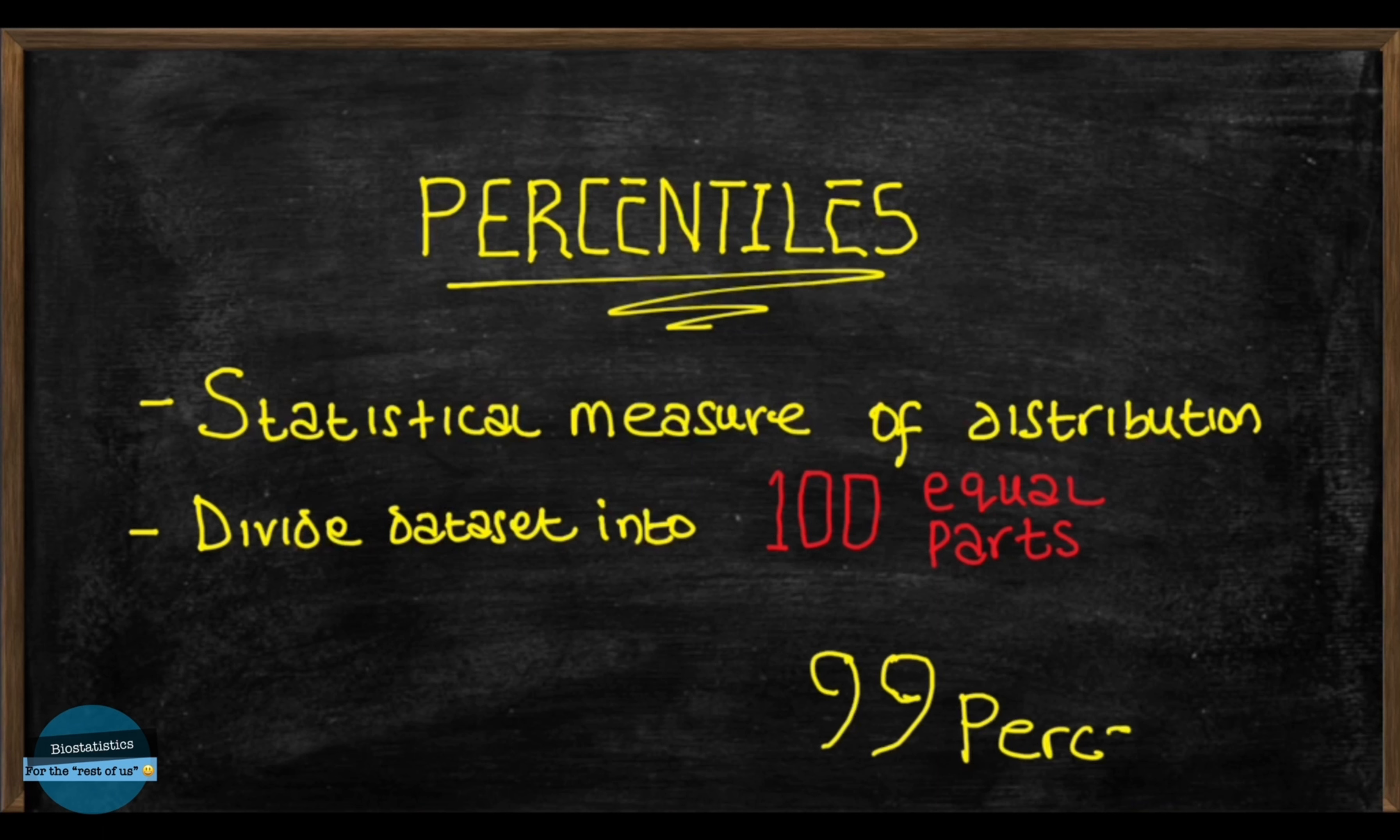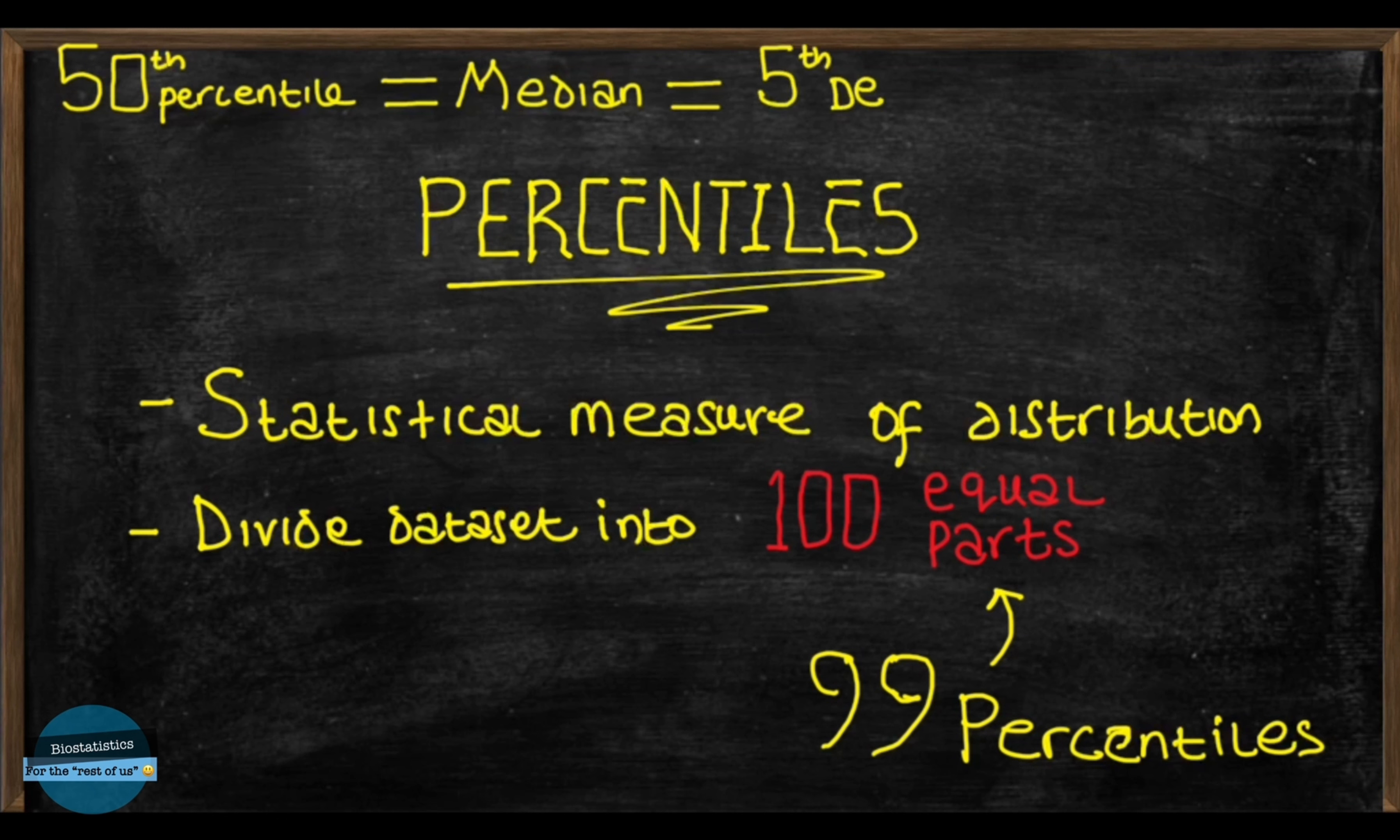There are 99 percentiles that divide a data set into 100 equal parts. The 50th percentile is the same as the median of the data set which is also the same as the fifth decile or the second quartile.